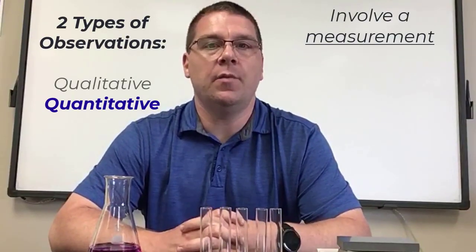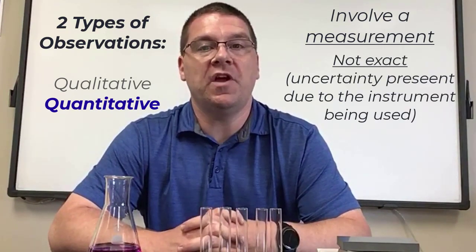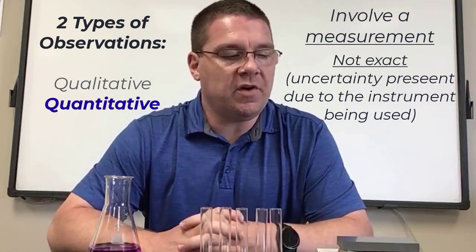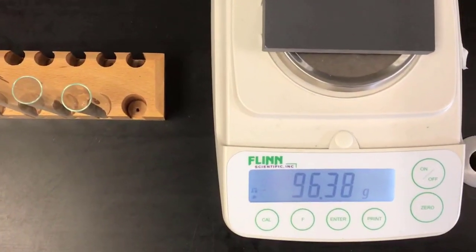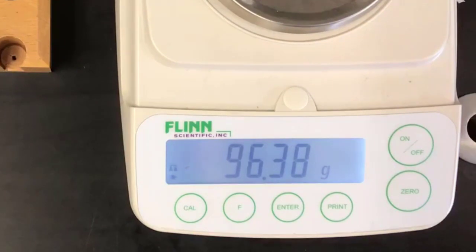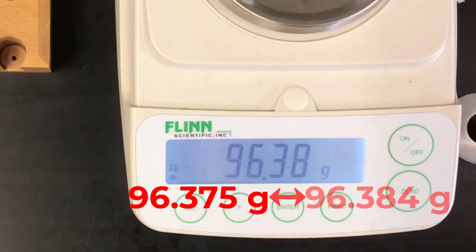Other times, uncertainty as to the exact value of a measurement may exist due to the nature of the instrument we are using. The block appears to have a mass of 96.38 grams. But is it really, or is it somewhere between 96.375 and 96.384 grams?